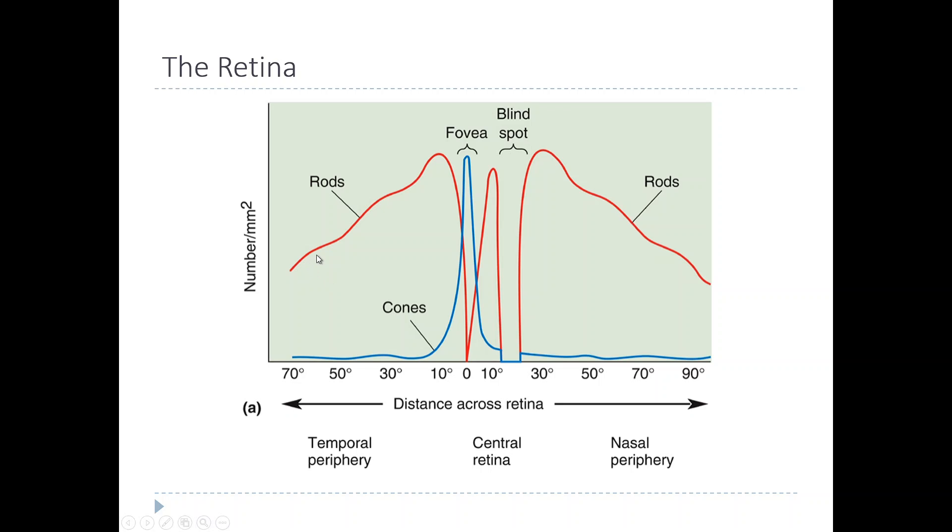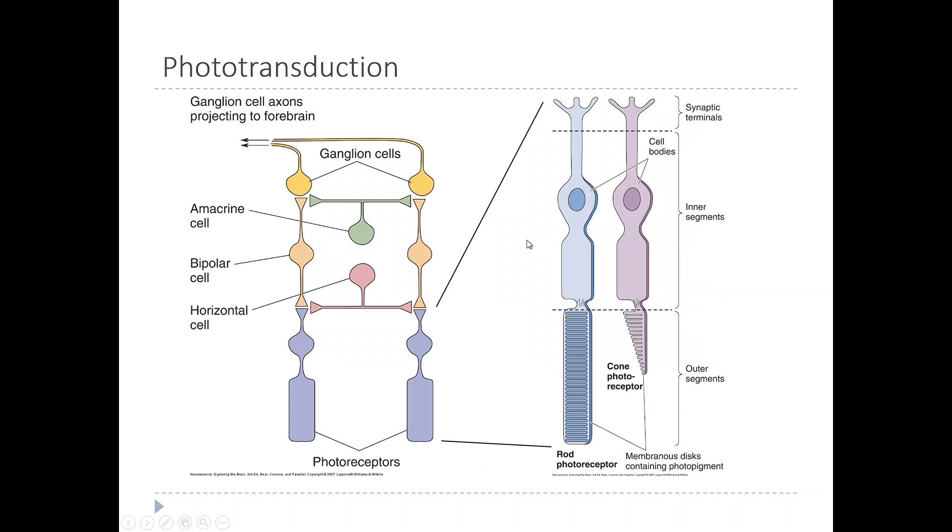Now of course there's a big gap here - this is the blind spot. In the blind spot there are no photoreceptors at all, about 15 to 20 degrees away from the fovea. In the next section we will talk about phototransduction.